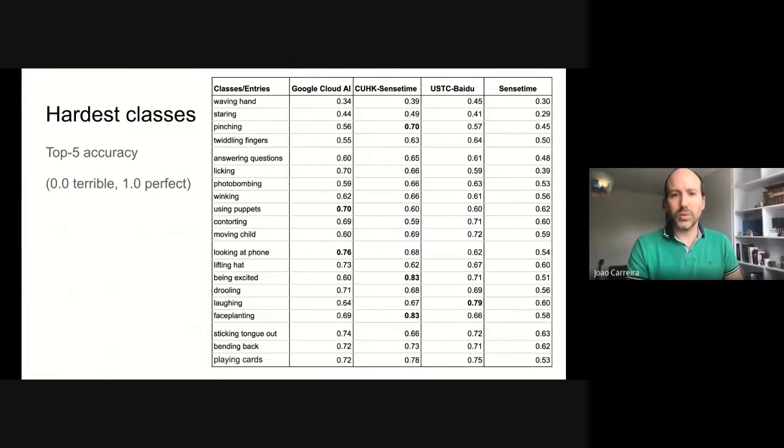The hardest classes are a bit more interesting. Here we show lowest top 5 accuracy, again from 0 to 1, where 0 is terrible and 1 is perfect. We can see that some of the hardest classes, like waving hand, staring, or pinching, have nothing to do with particular scenes nor objects, and are about simple gestures. There are other examples of the same type, such as drooling, laughing, winking, and sticking tongue out. Then there are also complex social actions, such as answering questions or photobombing.